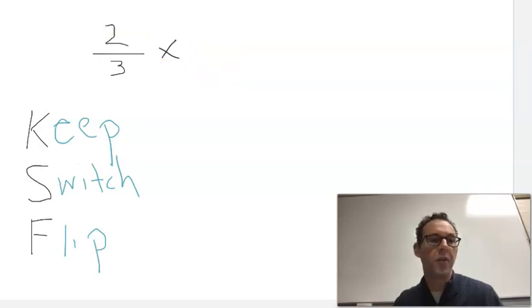The reciprocal to one over fourth is four over one. And when we multiply across, we get eight-thirds, and so two-thirds divided by one-fourth is eight-thirds. But why does Keep Switch Flip work?